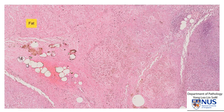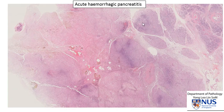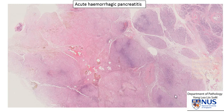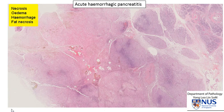Microscopically, there is some residual fat, and all these areas have been destroyed by enzymatic action. The tissue is necrotic, and you can't really see the nice outlines of pancreatic acini and ducts. Here at lower magnification you can see the preserved lobulations of the pancreatic tissue, and then the area that was destroyed by enzymatic digestion, giving rise to necrosis, edema, hemorrhage, and also fat necrosis.